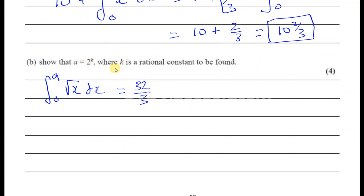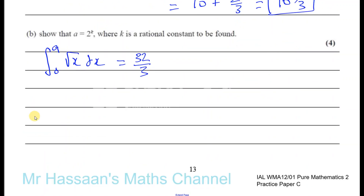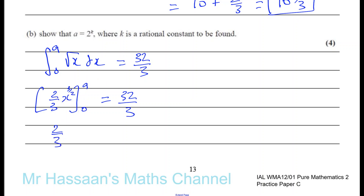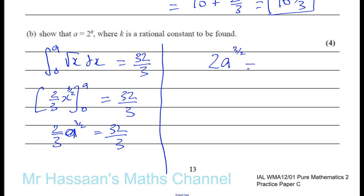We've got to show that A is equal to 2 to the power of something and find what k is. When we integrate, we get 2 thirds x to the power of 3 over 2 with limits of A and 0, and we know that equals 32 over 3. Substituting A gives 2 thirds times A to the power of 3 over 2 minus 0 equals 32 over 3. Multiplying both sides by 3 gives 2 times A to the power of 3 over 2 equals 32.